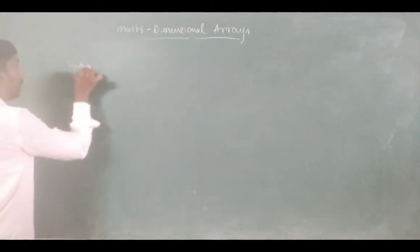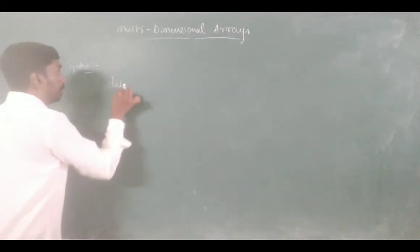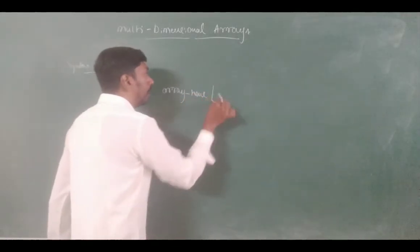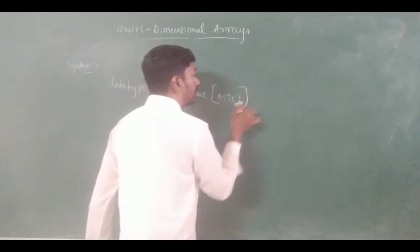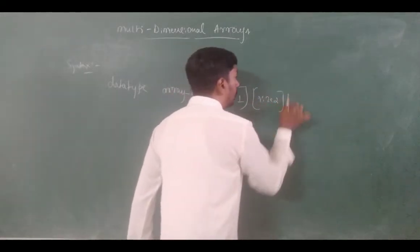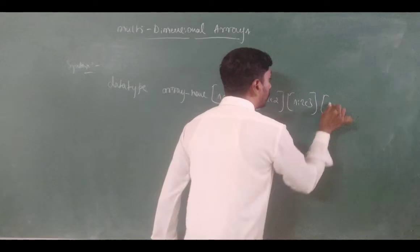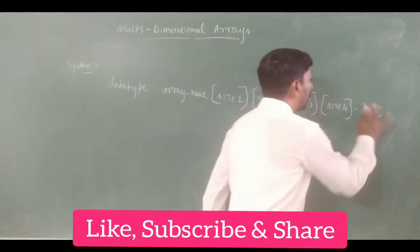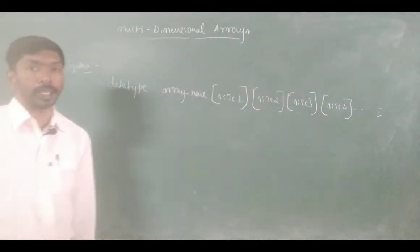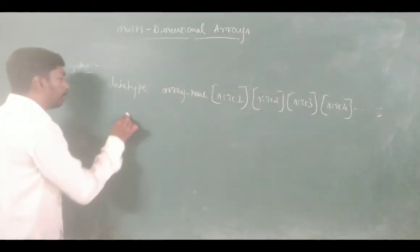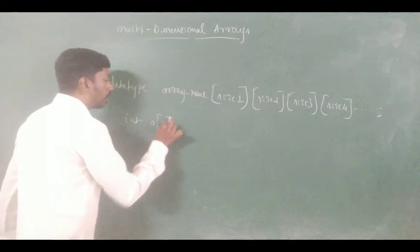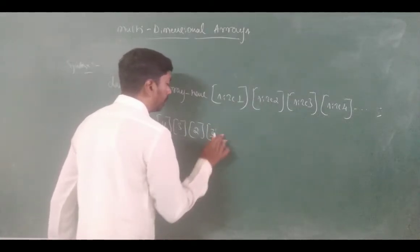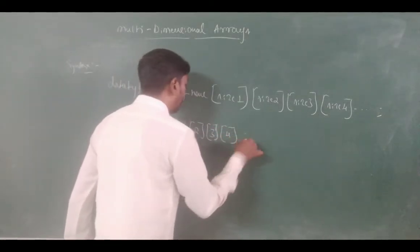For example, the syntax is: same data type, data type, array name, and we can use the number of sets of square brackets — 1 set of square brackets, 2 sets of square brackets, 3 sets of square brackets, 4 sets of square brackets — this is the number of sets of square brackets.